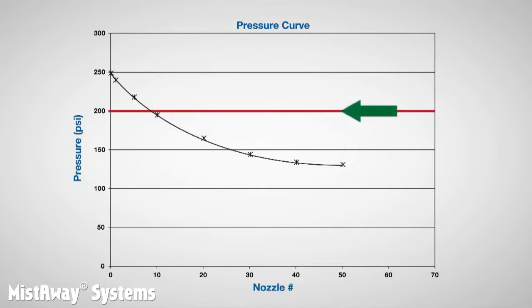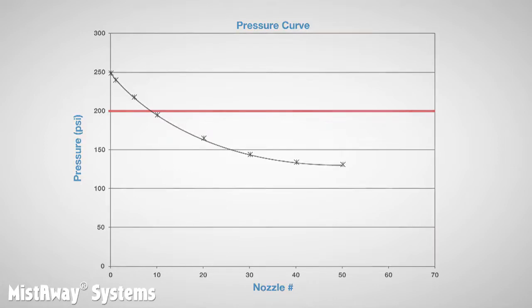Note the red line at minimum target pressure of 200 psi. All the nozzles after number 10 are operating at less than 200 psi. That's no good — so what's going on?